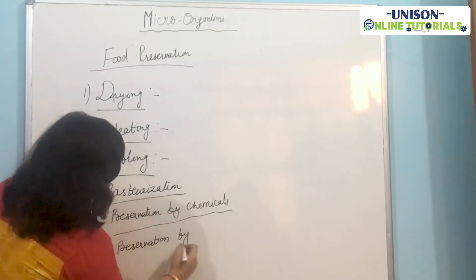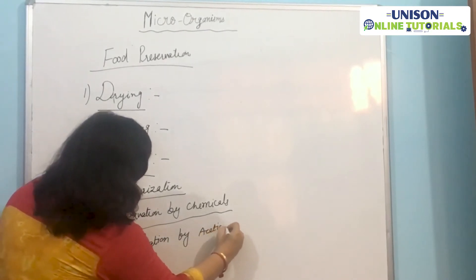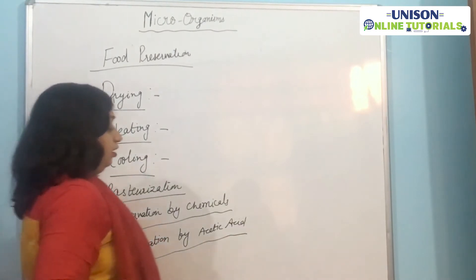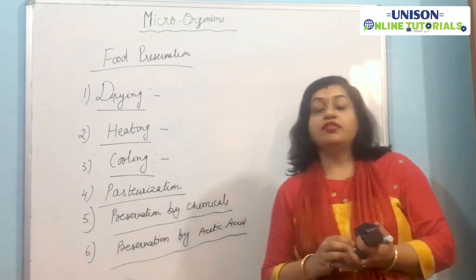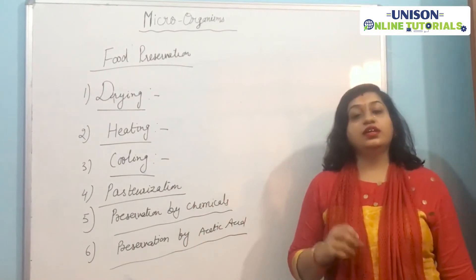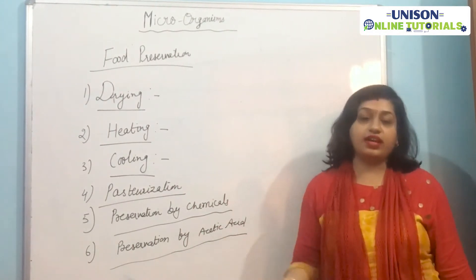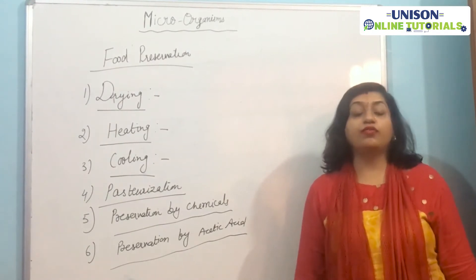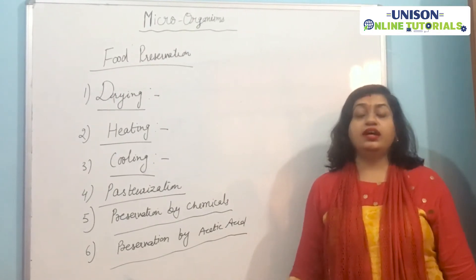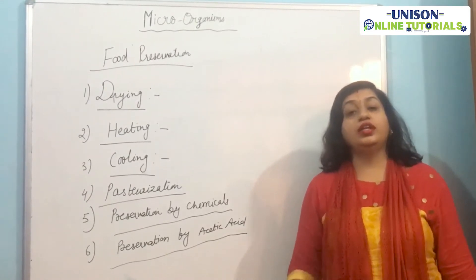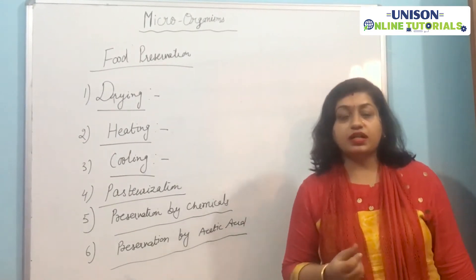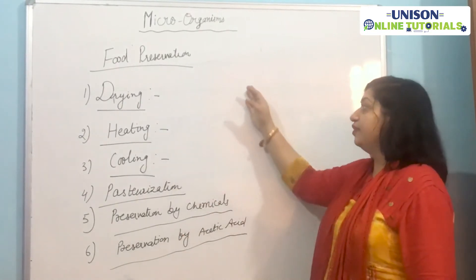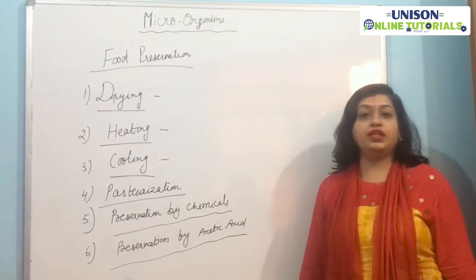The last preservation method is by using acetic acid or vinegar, and mustard oil. Vinegar is the dilute solution of acetic acid. Acetic acid is used in the preservation of food. Mustard oil is also used in pickles — it is added to achaar, and the food is preserved for a long time. These are the different methods to preserve food.